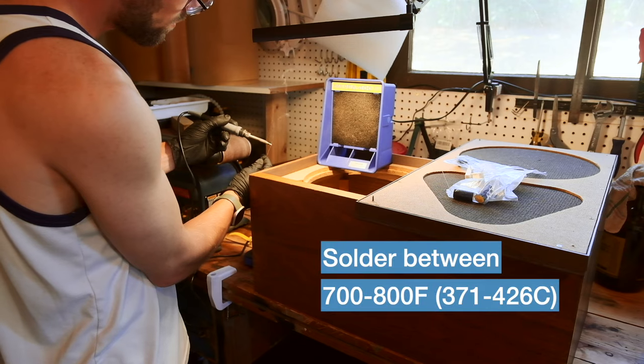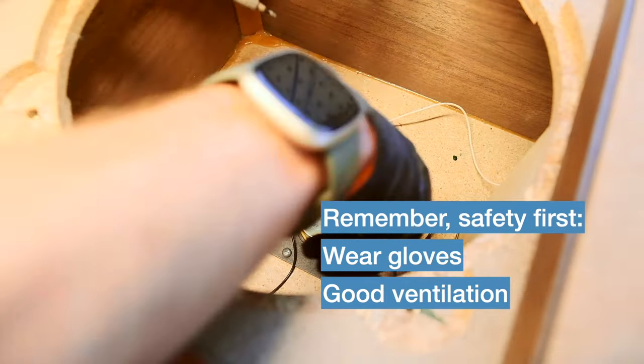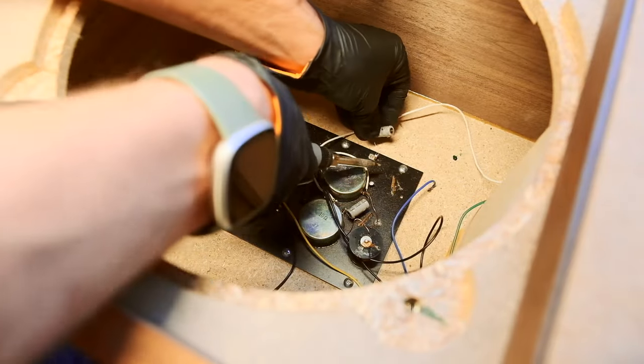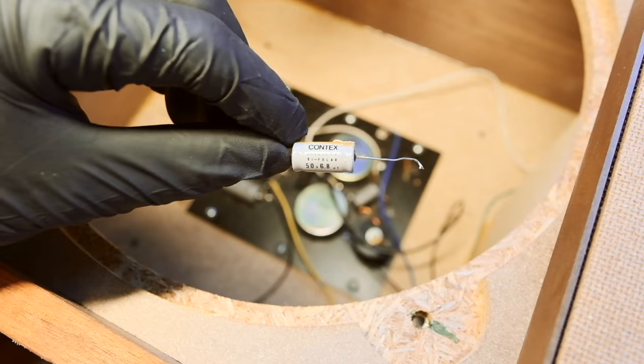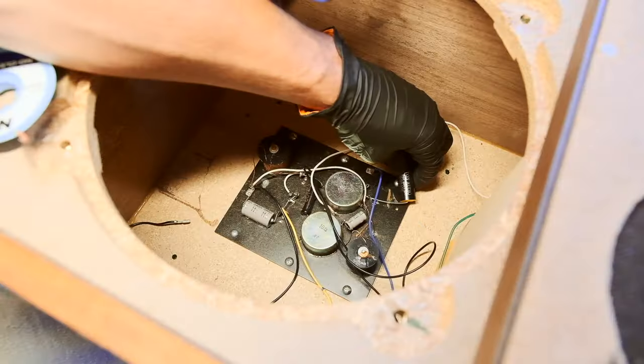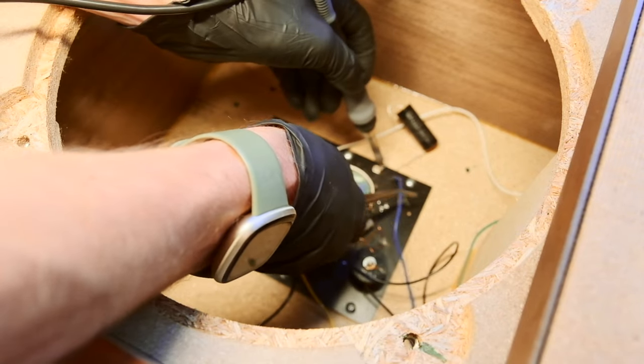I run my soldering iron between 700 to 800 degrees Fahrenheit and use leaded solder that contains a small amount of silver for better electrical properties. This is the old 6.8UF electrolytic capacitor and this is the new film capacitor. Film is bigger and much more expensive but won't degrade over time like electrolytic caps.